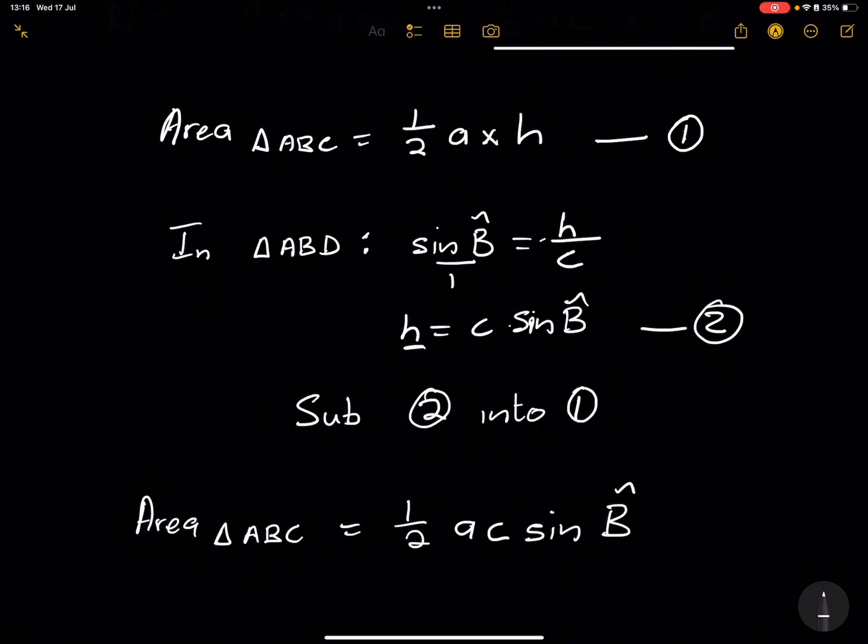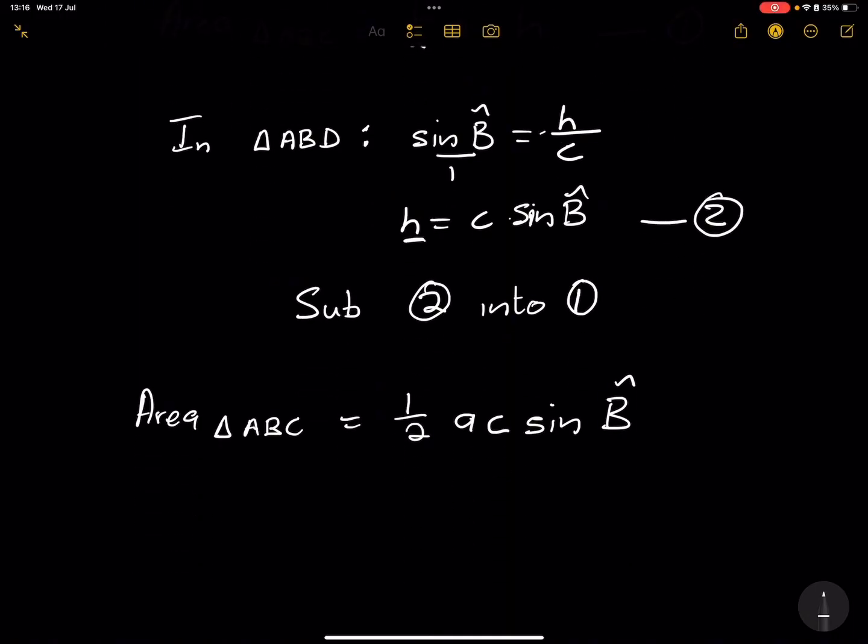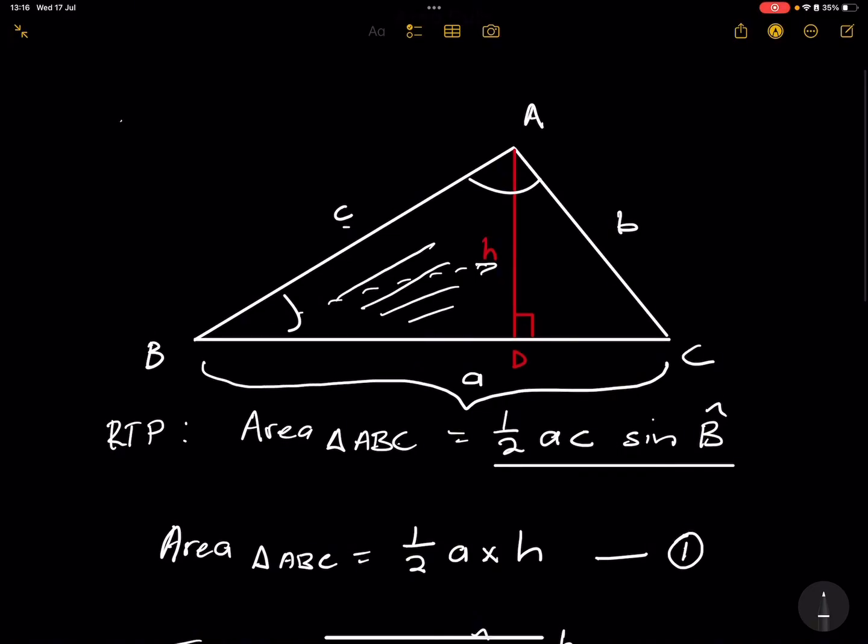H is C times the sine of B. And of course, I could have done it with any of the sides, but there it is. We've got the two sides, A and C. So this side and this side, the included angle, which is the angle in between the two sides that we're looking for.